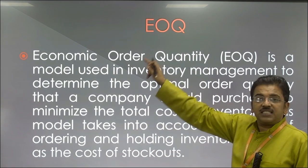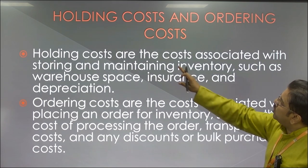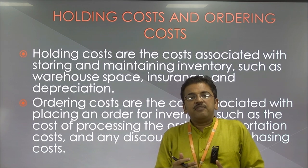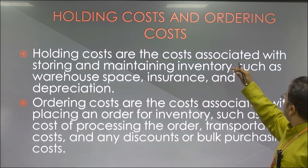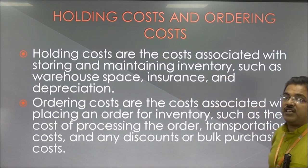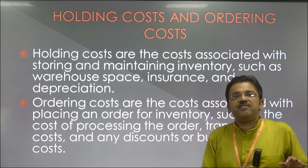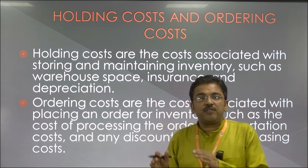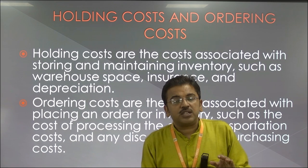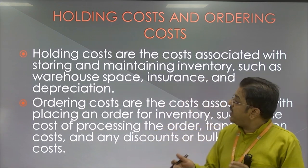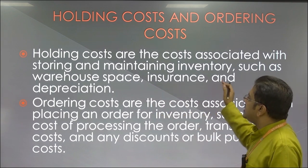This system is what we are going to see in Economic Order Quantity. Two things are very important: the first is the holding cost and the second is the ordering cost. Holding costs are the costs associated with storing and maintaining inventory — where you are going to store it and how you maintain it — along with warehouse space, insurance, and depreciation.